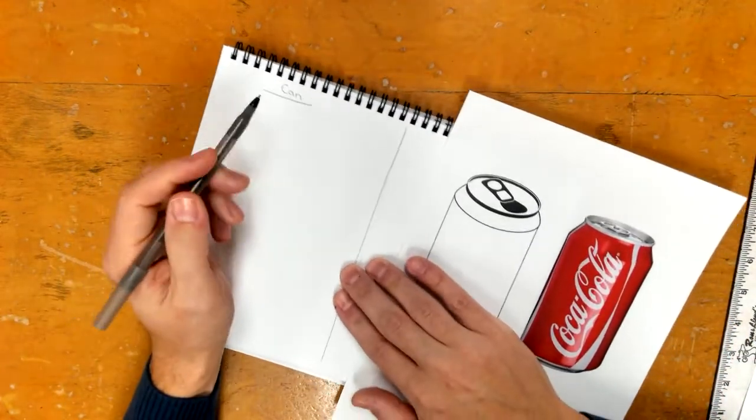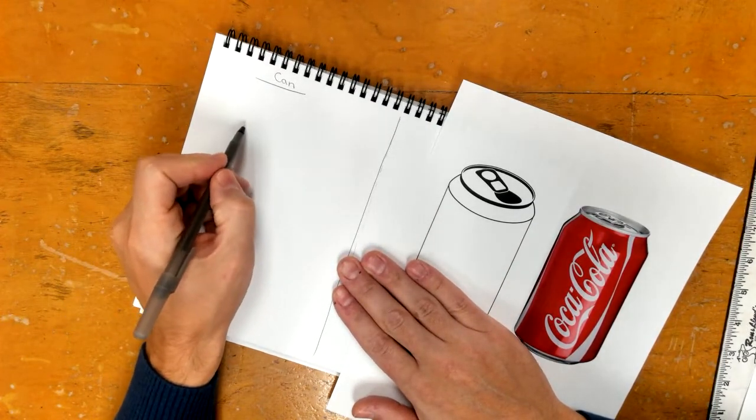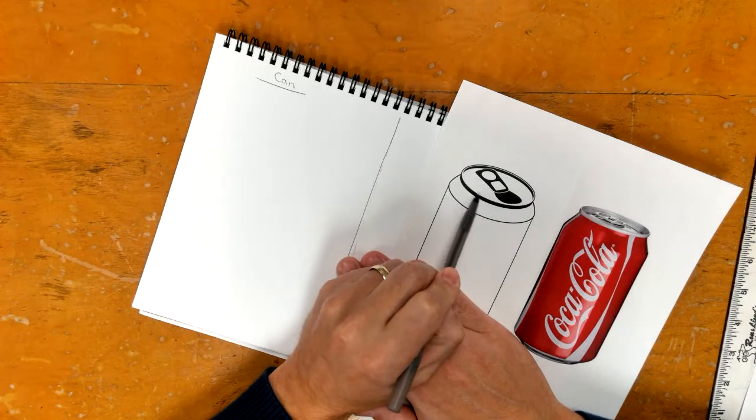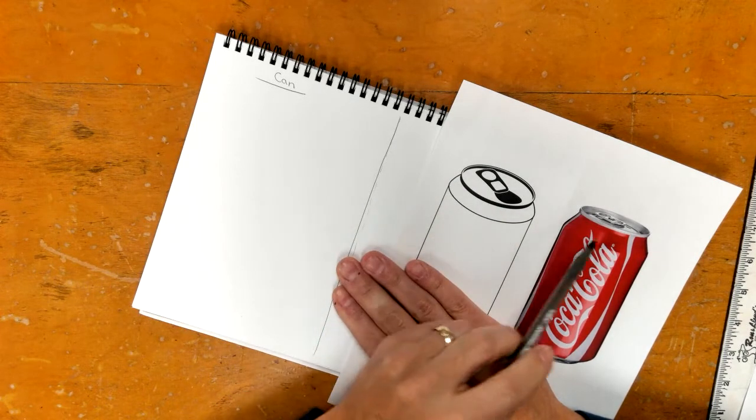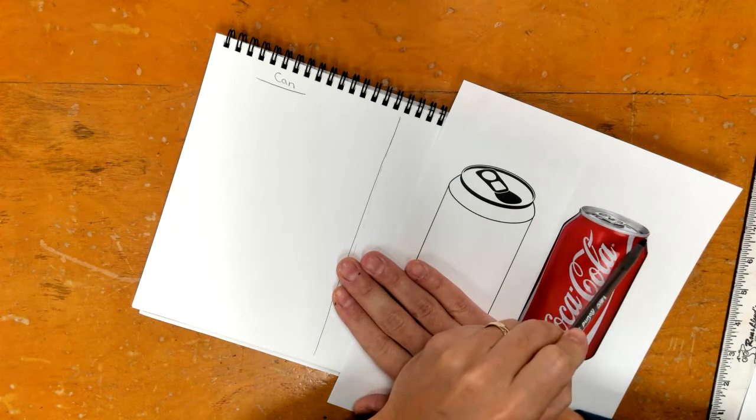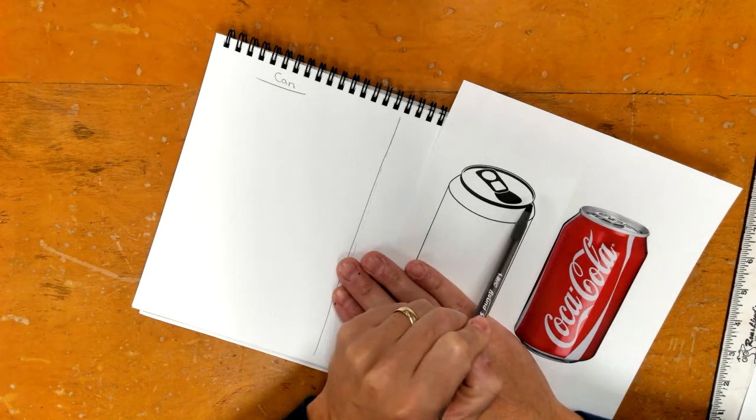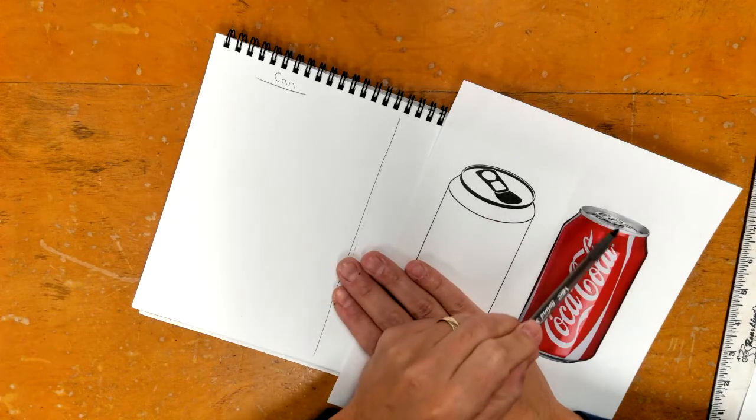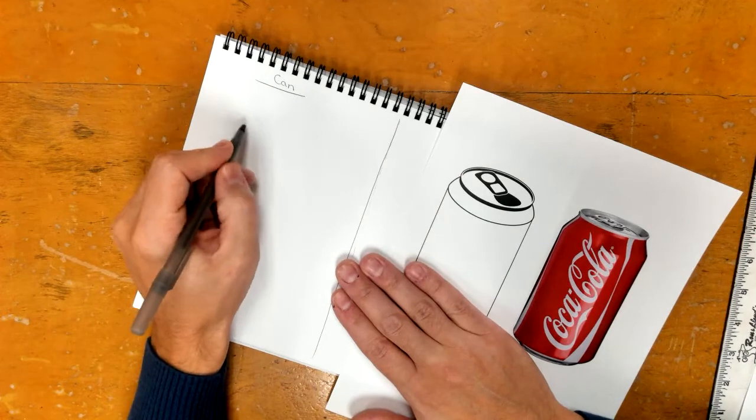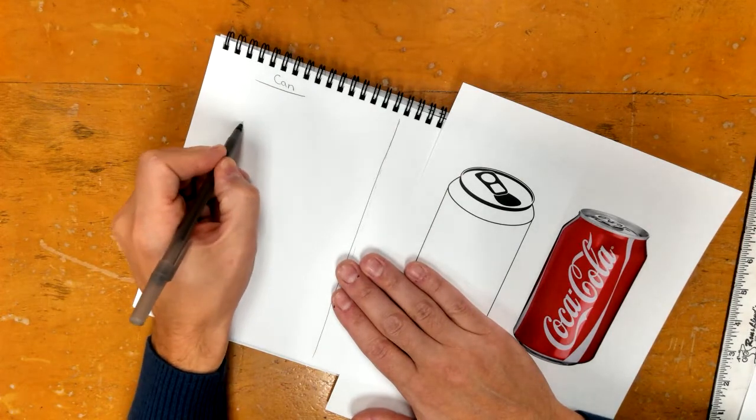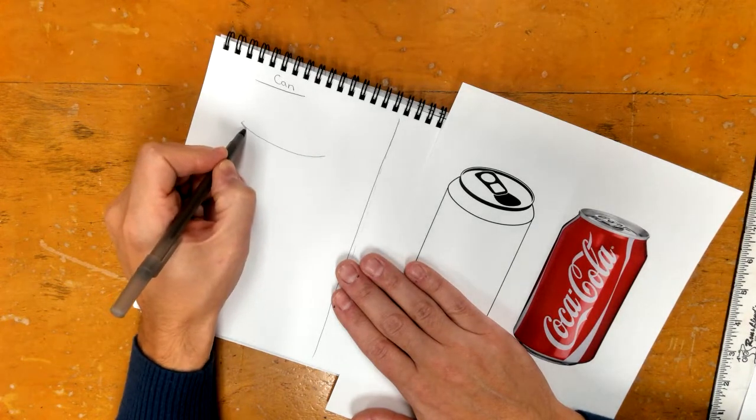So for the soda can, what you want to basically start on is just like you did with the cylinder there, the top. I'm going to have mine look a little bit more like this one. I don't need to see this much of the top. I'm going to make mine a little bit harder to see. So I start out by drawing that bottom curve.